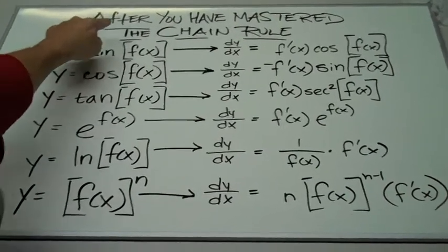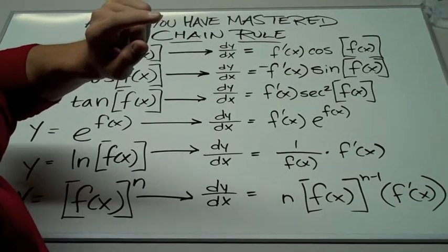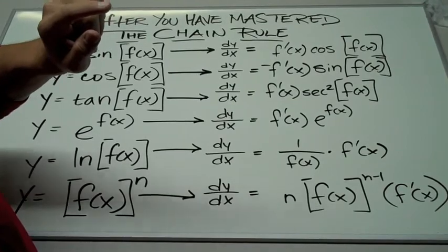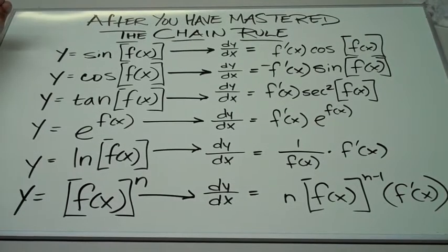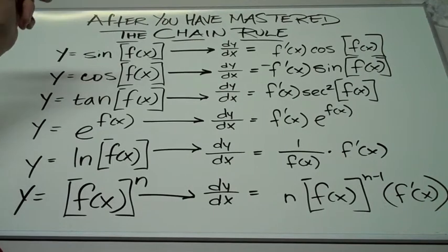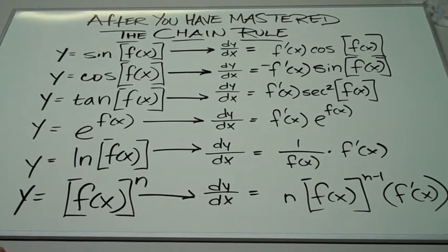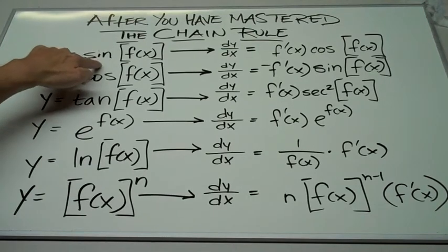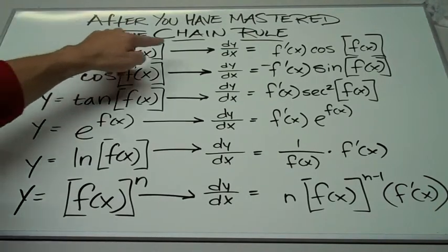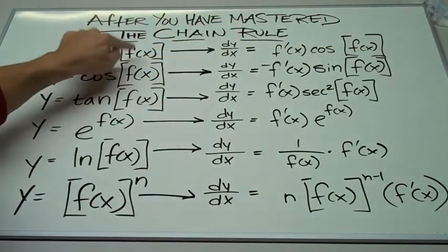Here's a slide saying, now, only after you have mastered the chain rule should you be able to jump to this, and I hope by this point that this makes sense. If y is equal to sine of some function f of x, then dy dx is cosine f of x times the derivative of f of x.